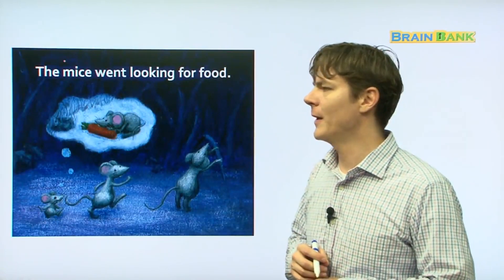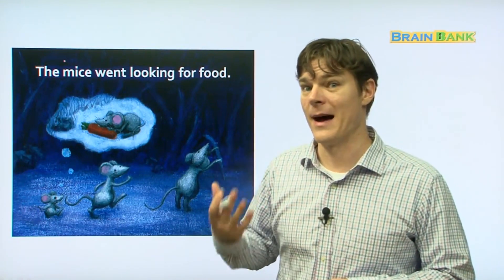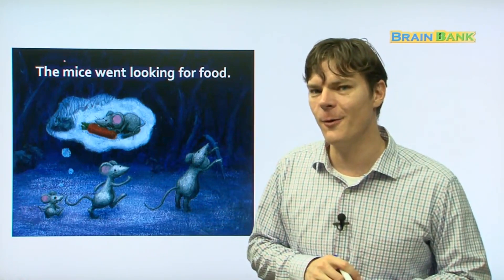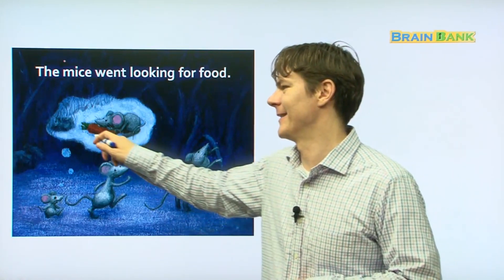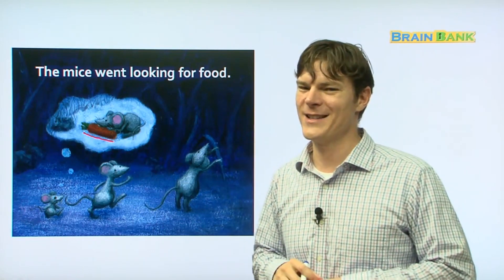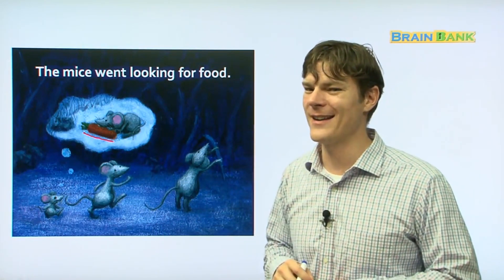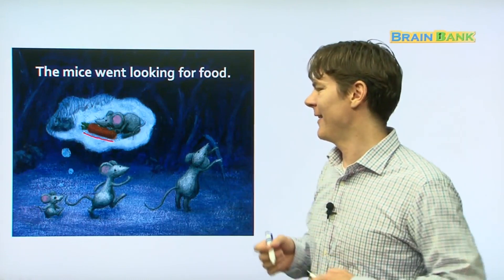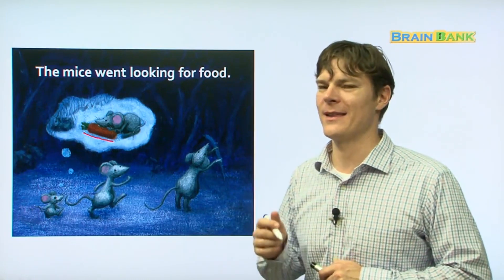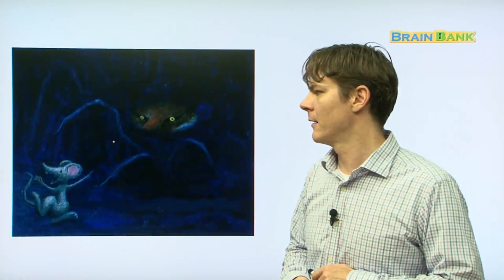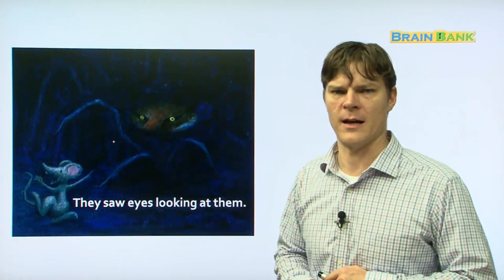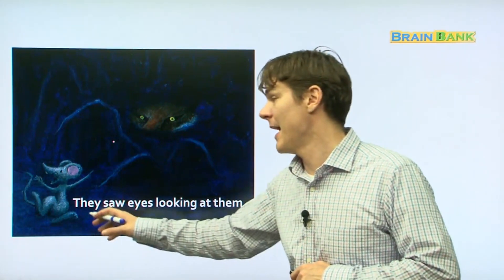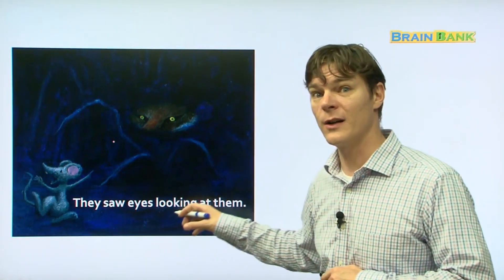The mice went looking for food. What kind of food are they looking for? A carrot. A nice juicy orange carrot. So delicious. And there they are, walking around happy, thinking about the carrot. But then, they saw eyes looking at them.